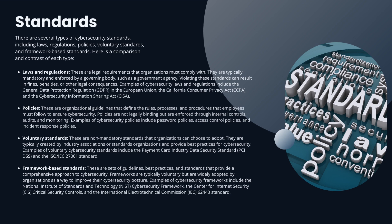Voluntary standards are non-mandatory standards that organizations can choose to adopt if they believe they would be beneficial. They are typically created by industry associations or standards organizations that provide best practices for cybersecurity. Examples include PCI DSS and the ISO series of standards, such as ISO/IEC 27001. Framework-based standards are sets of guidelines, best practices, and standards that provide a comprehensive approach to cybersecurity. Frameworks are typically voluntary but are widely adopted. Examples include the NIST CSF, the Center for Internet Security (CIS) Critical Security Controls, and the IEC 62443 standard.